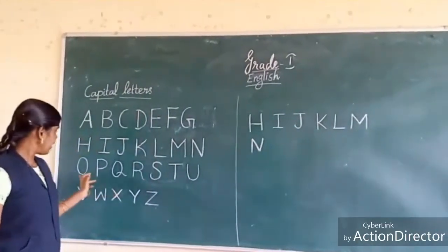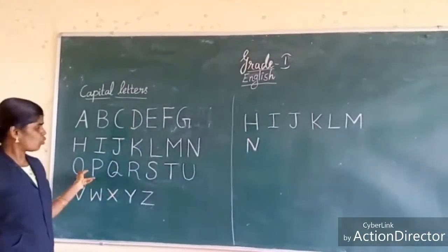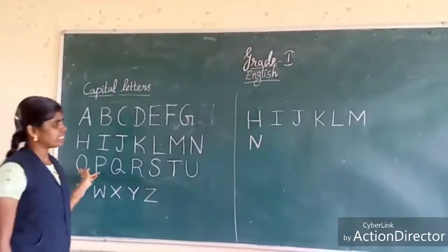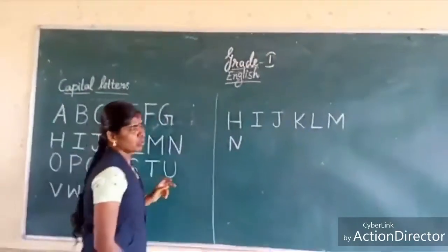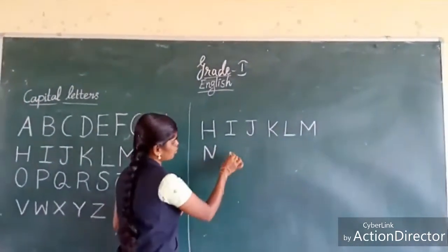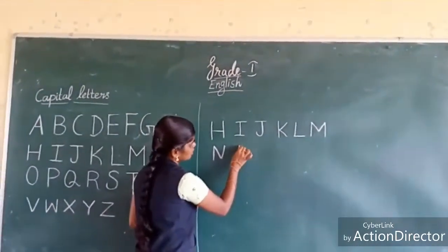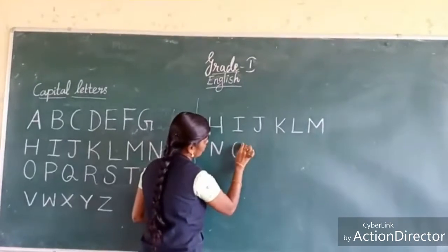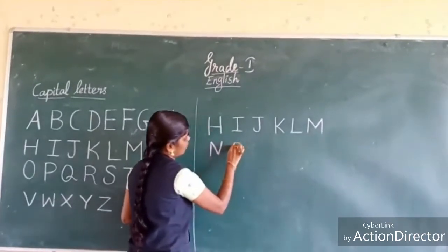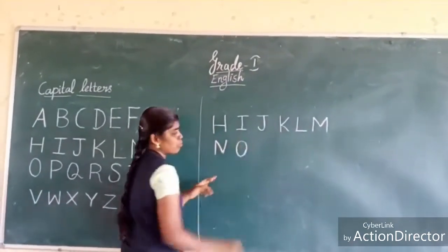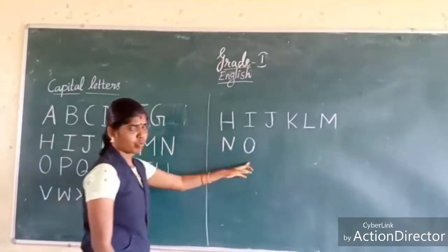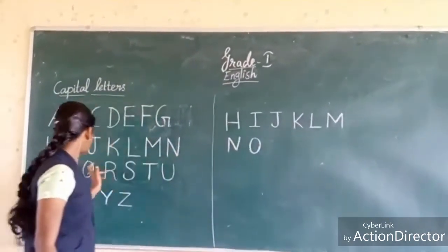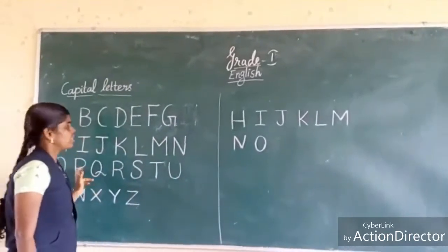Next, N. How do I write N? One standing line, one cross line going diagonally, and another standing line. And next, O. It looks like a ball. This is O.